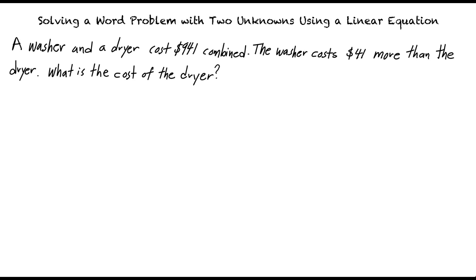We do not know the cost of the dryer, so we can assign that to the variable x. We know that the cost of the washer is $41 more than the cost of the dryer. This means that the washer's cost is equal to x plus 41.